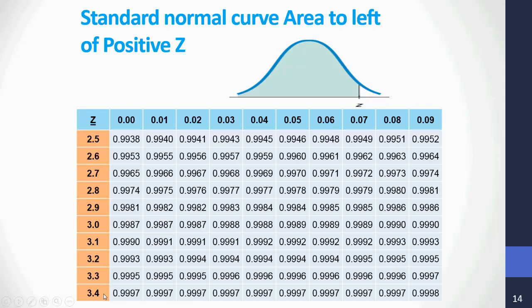What is the area to the left of 3.49? We read 3.4 vertically and 0.09 horizontally. At the intersection is 0.9998. Now, suppose we are solving a real-world problem and get a Z of 3.57. As you can see, the table stops at 3.49, so there is no 3.57. By convention, we will use 0.9999 for anything greater than 3.49, since at the 3.4 level the probability is already very close to 1 — around 0.997 to 0.998.